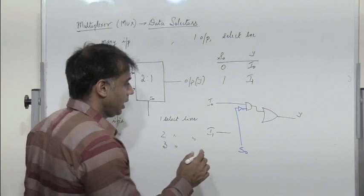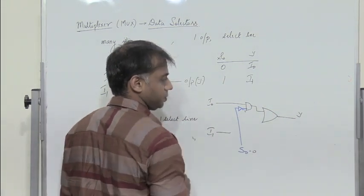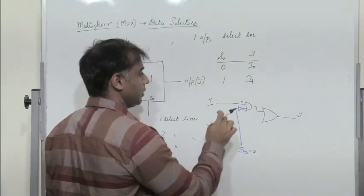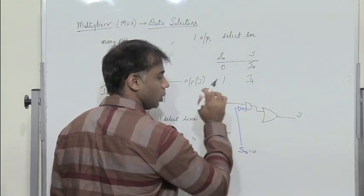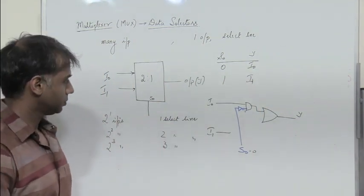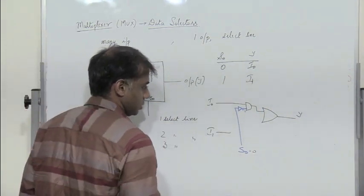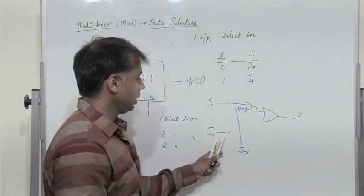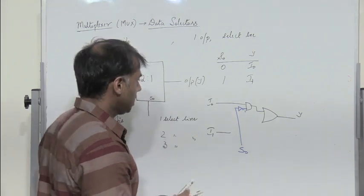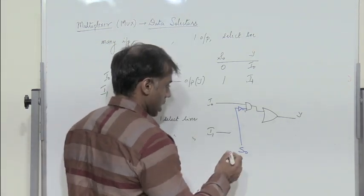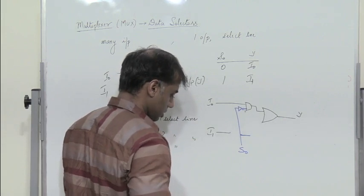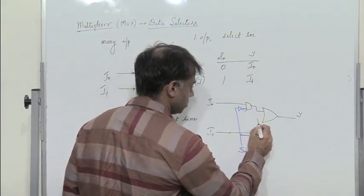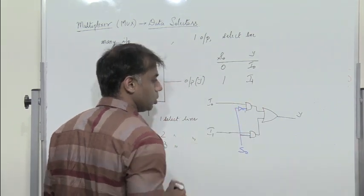When s0 is 0, the inverter output is 1. If i0 is 0, I get a 0 at the AND gate output; if i0 is 1, I get a 1. When s0 is 1, I need i1 at the output. So we connect s0 and i1 directly to another AND gate and pass its output to the input of an OR gate.